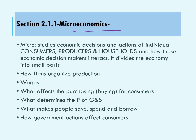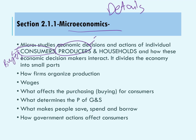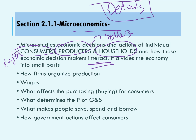So we will start with microeconomics. Microeconomics is mainly about details. It studies economic decisions and actions of individual consumers — who are the buyers — producers — who are the sellers — and households, and how these economic decision makers interact. It divides the economy into small parts, so we talk about firms and how they organize their production.